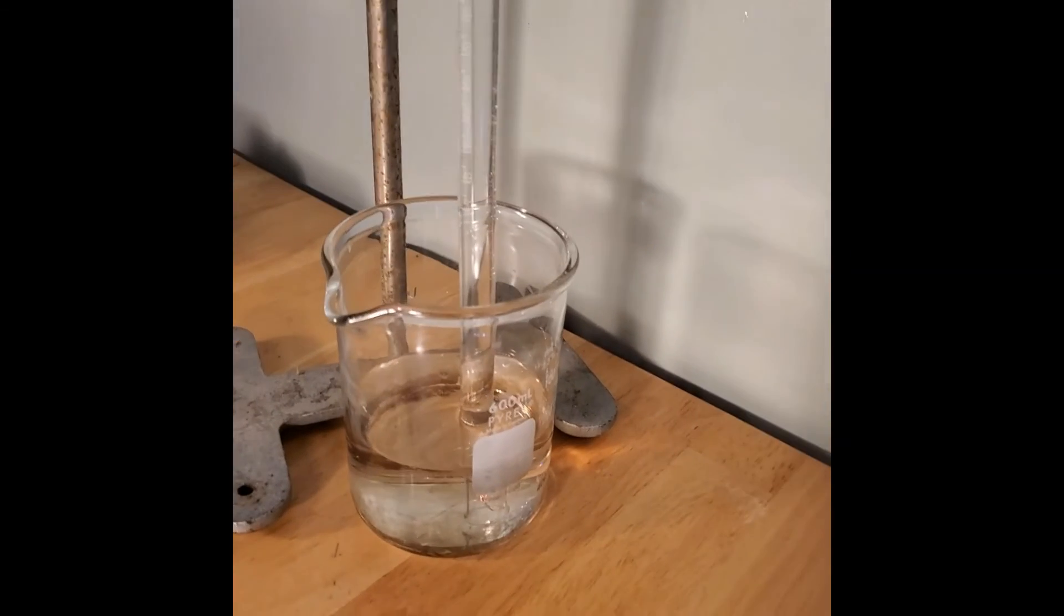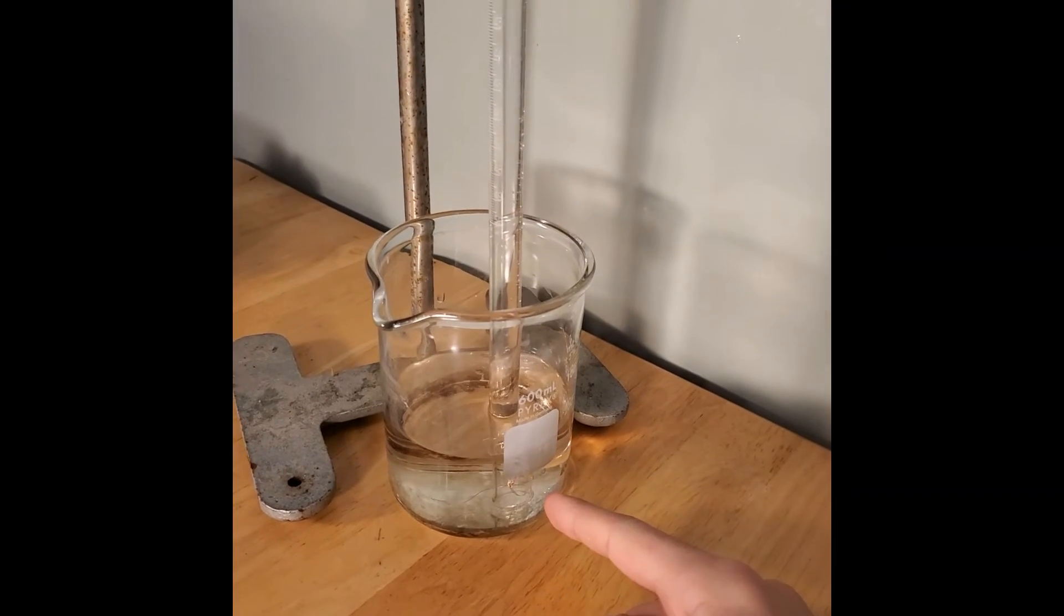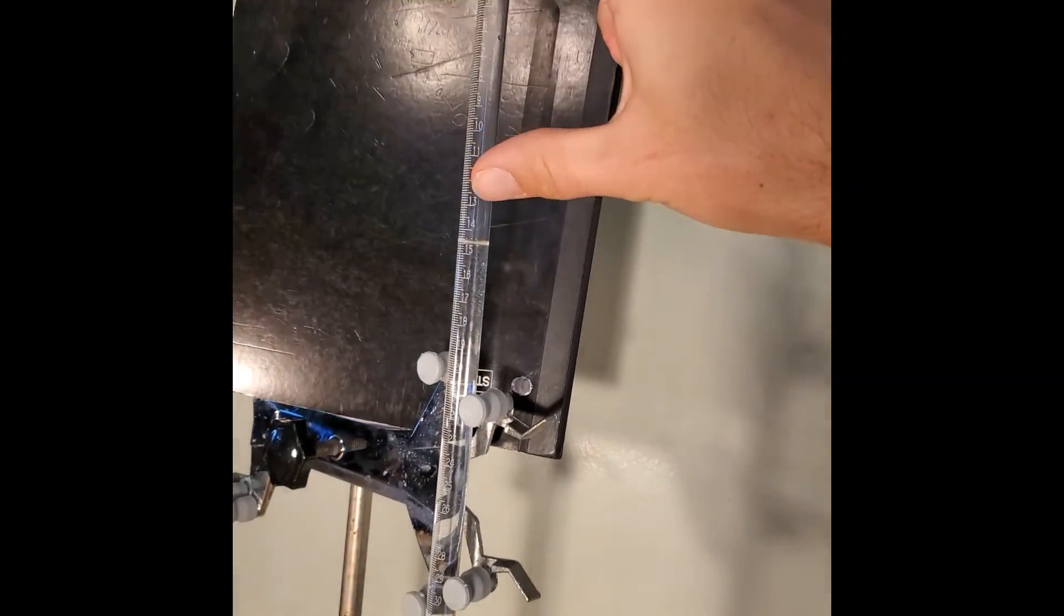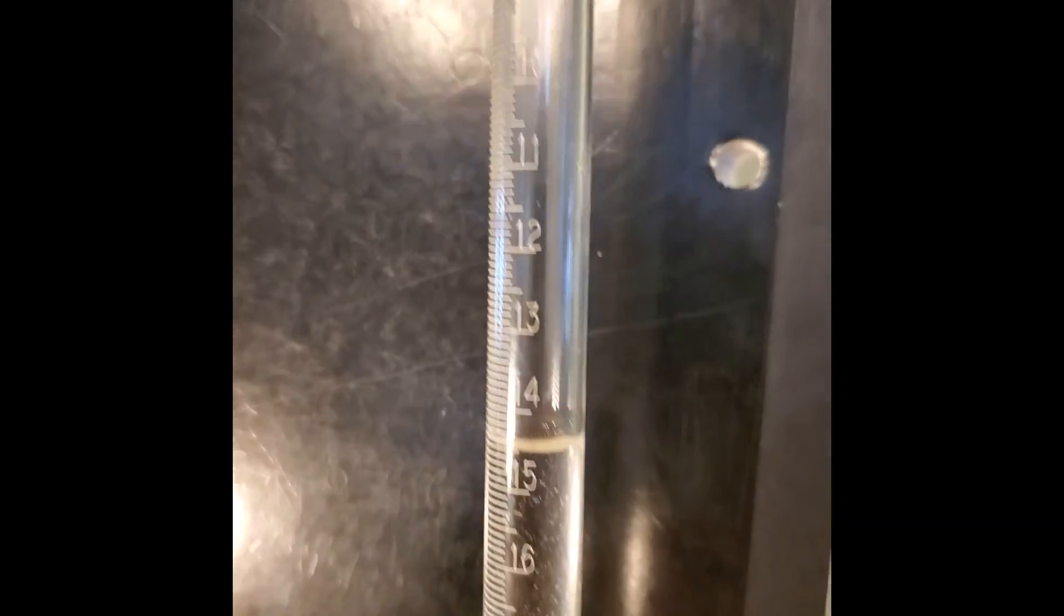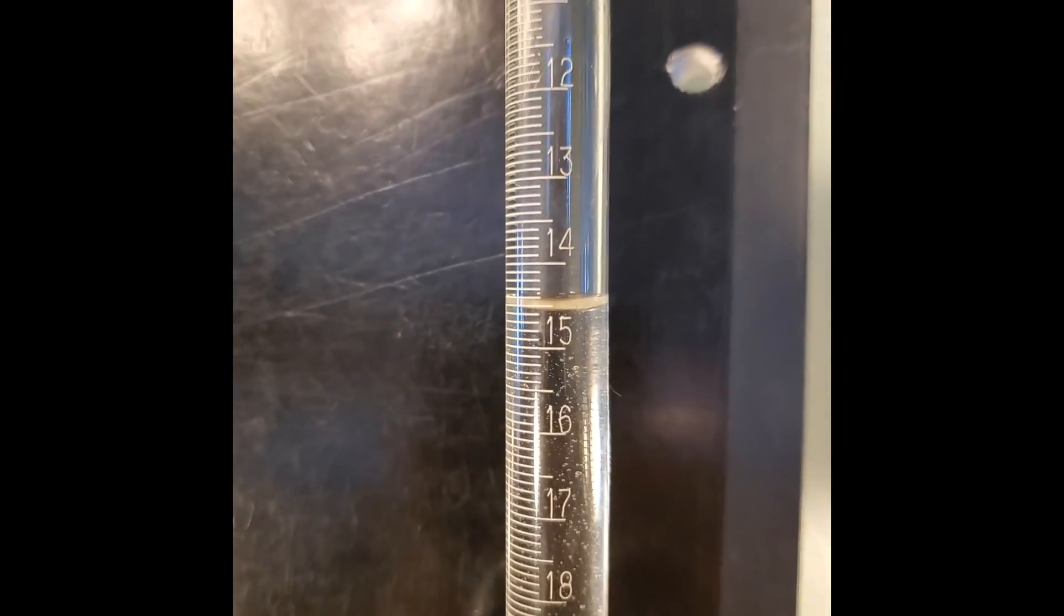All right, another real quick recap. So what we did is we reacted our magnesium with the hydrochloric acid. We collected, it is going to end up being hydrogen gas here. I can now measure the volume. I put the black notebook up behind it so that it was easier to see. I can measure the volume of the gas that was collected.